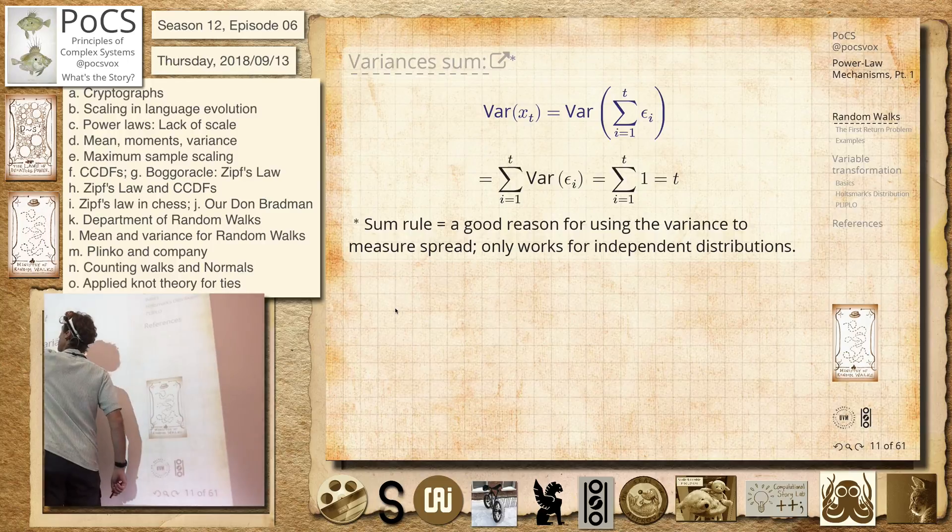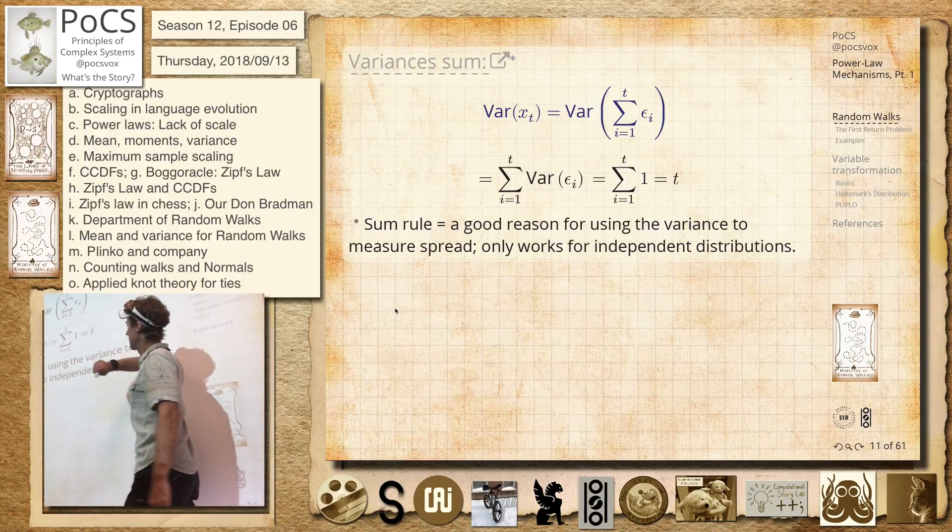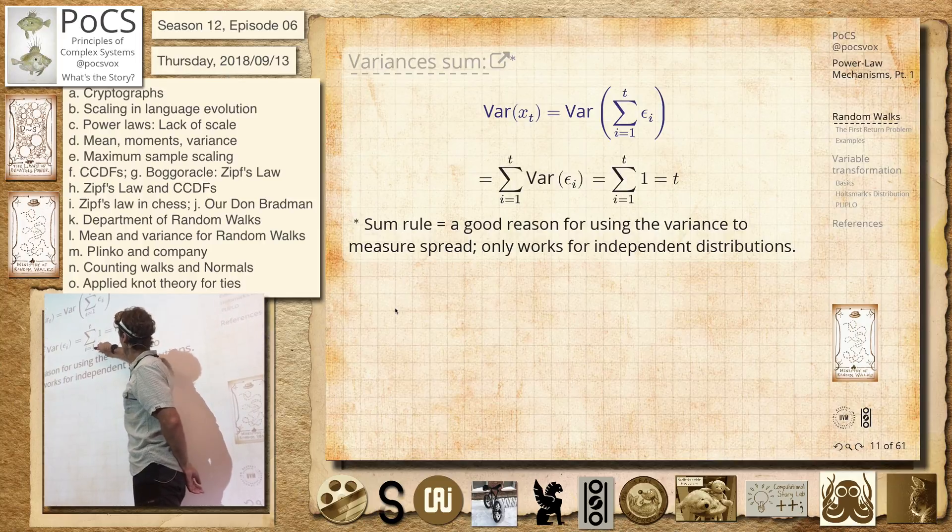Because we've got a half times 1 squared plus a half times minus 1 squared. So that's a half plus a half, so it's 1. So the variance is just the sum of 1 from i equals 1 to t, summing this constant up. So it's 1 plus 1 plus 1, and that's just t.